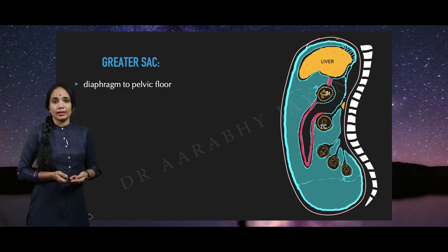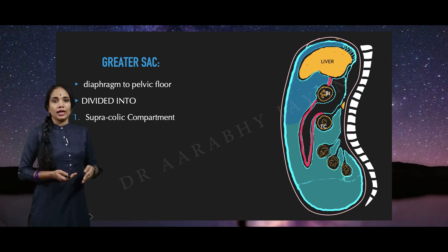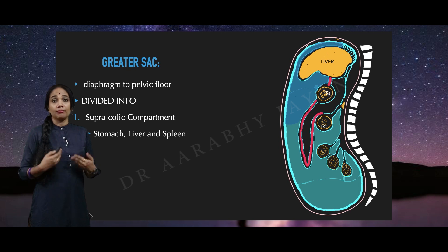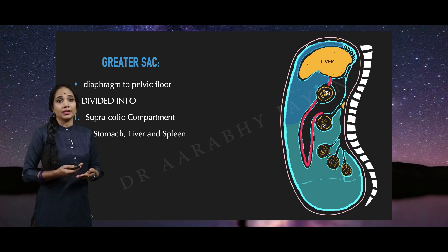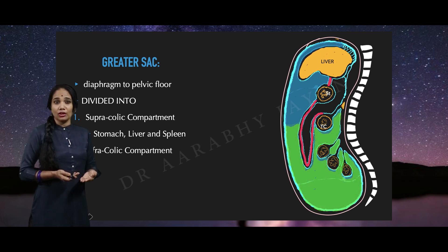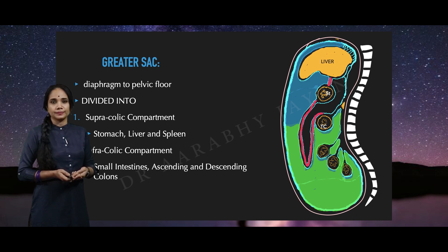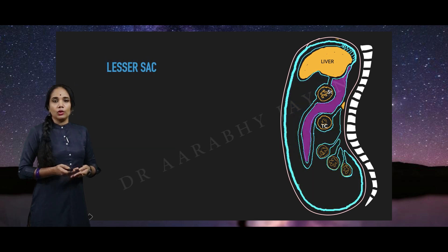What is the greater sac in definition? It extends from the diaphragm to the pelvic floor — it is a huge area — but it can be divided into two parts in relation to the transverse colon. The supracolic compartment is the area lying above the level of the transverse colon, and it has the stomach, the liver, and the spleen. Below the level of the transverse colon, we have the infracolic compartment, which has the small intestines and the ascending and descending colons.